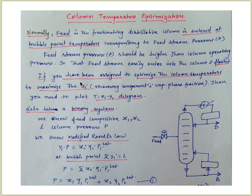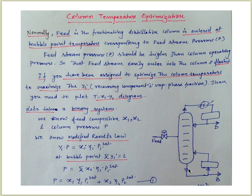If you want to optimize the column temperature to maximize yi — that is, the lighter component in the vapor phase — which is the top product, you need to plot the T-x1-y1 diagram and trial the temperature to increase the lighter product recovery.